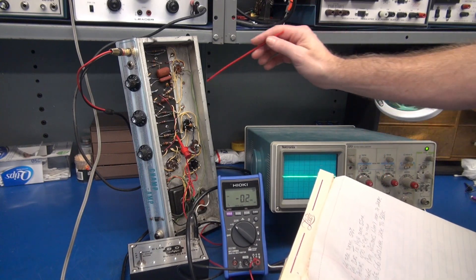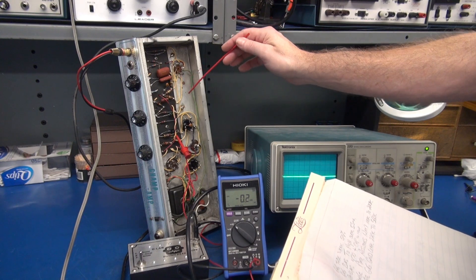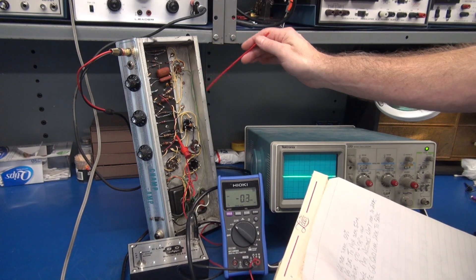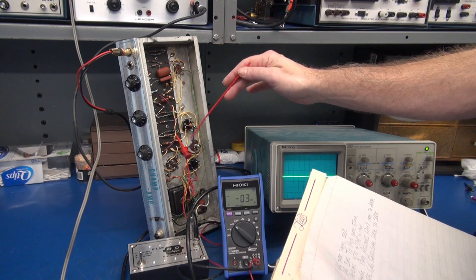We're going to change the plate resistors on the 12AX7 from 100k to 220k to increase the gain since you lose signal through the base and treble controls.